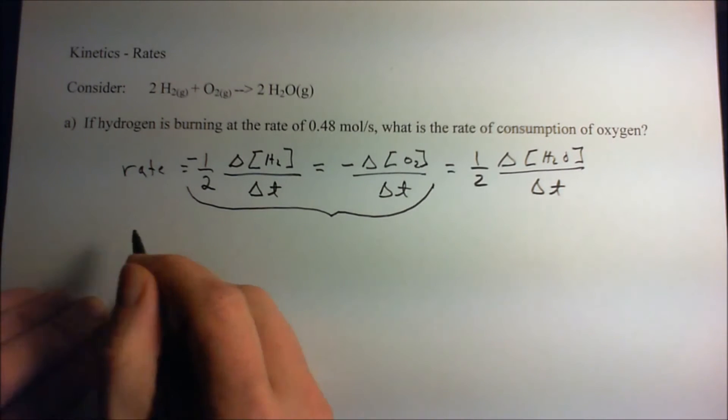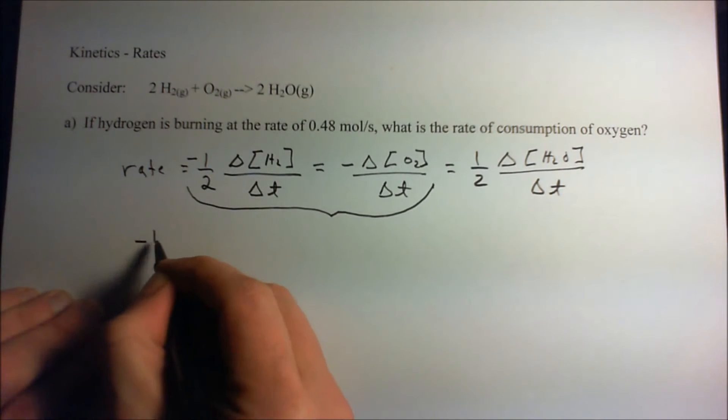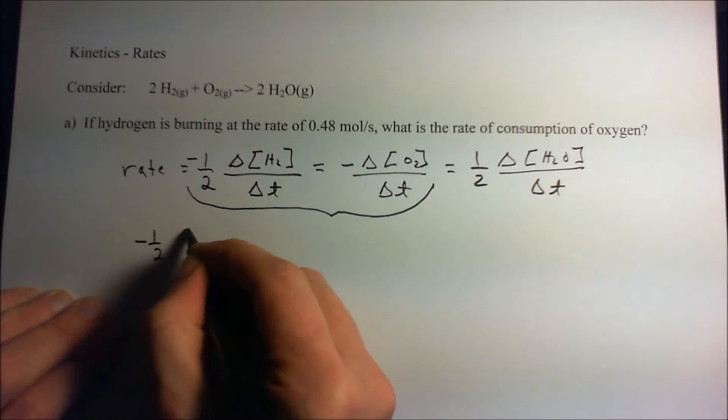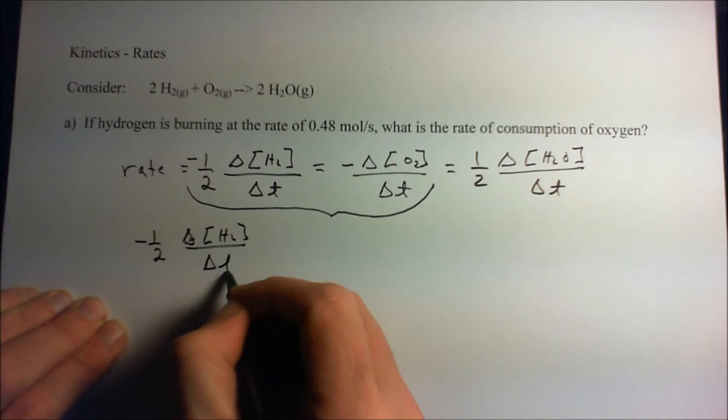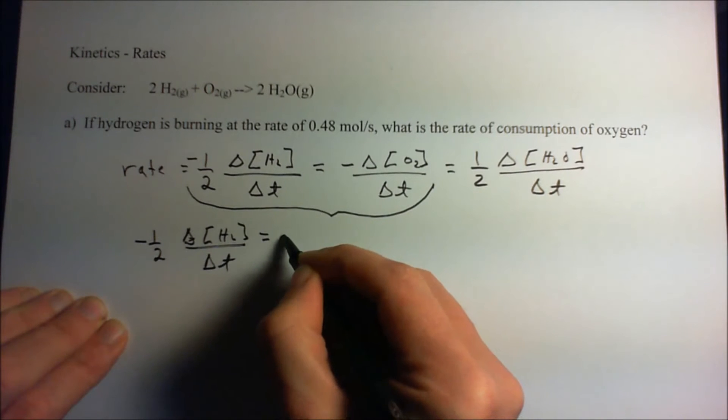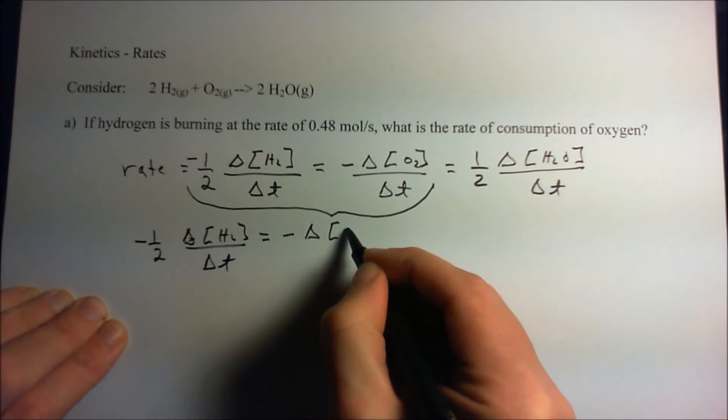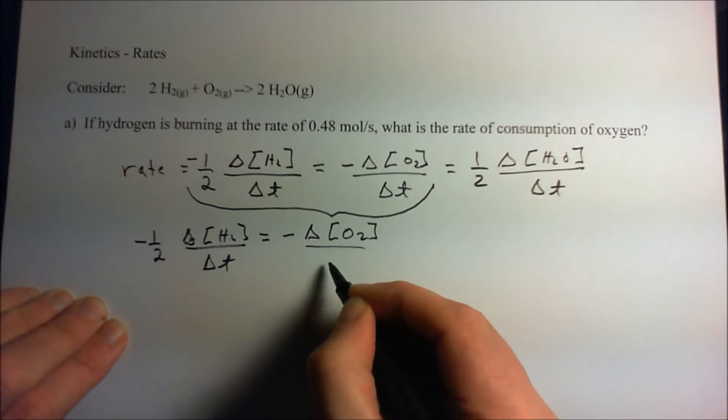Now, we can write this down, just rewrite it as one-half delta, the change of hydrogen with respect to time, is equal to minus the change in oxygen with respect to time.